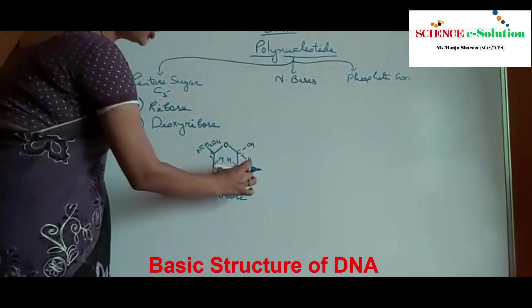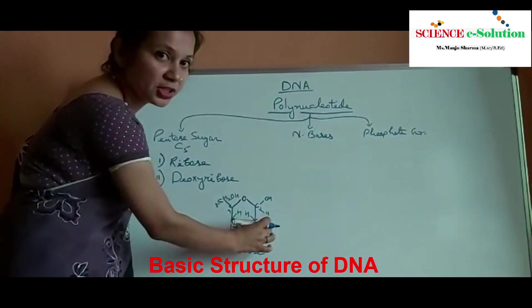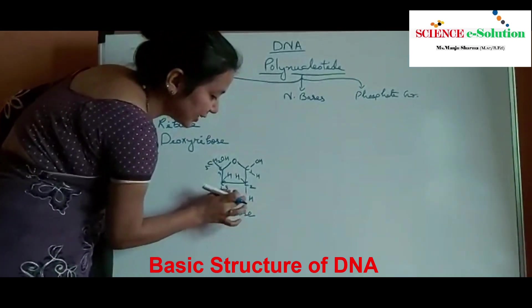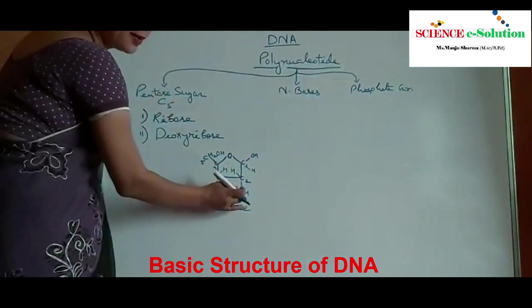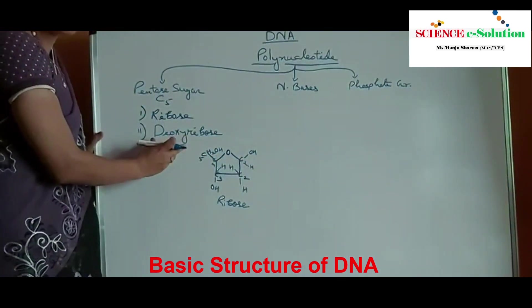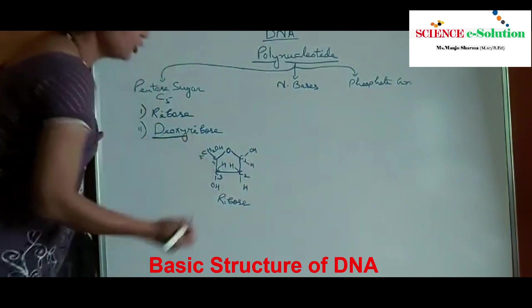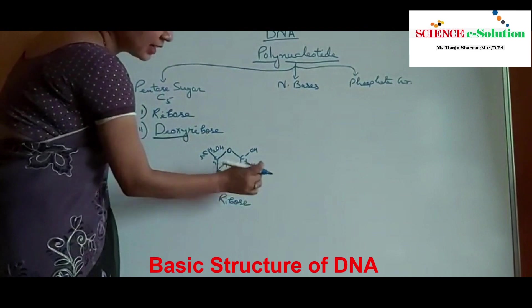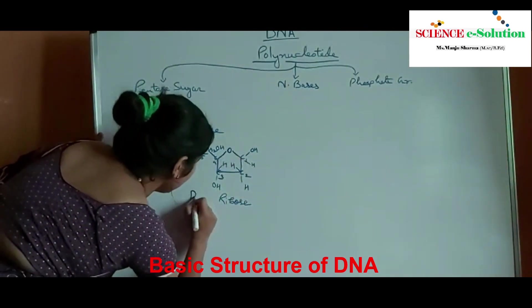Now the second carbon position is very important. When we remove oxygen from this second carbon position — that means when OH becomes H — ribose becomes deoxyribose. You can see from the name: deoxy means removal of oxygen. So when one oxygen is removed from the second carbon position, ribose becomes deoxyribose.